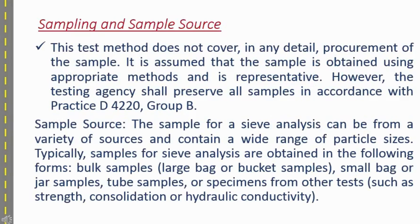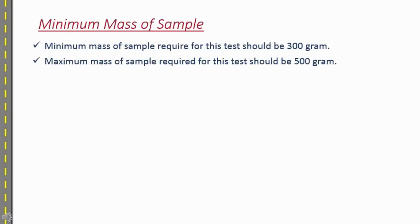For sample collection from the site, ASTM D4220 Group B is used. Sampling sources for sieve analysis can include large buckets, small bags, jars, or other containers. The minimum mass of soil sample for sieve analysis is normally 300 grams, and the maximum is 500 grams.